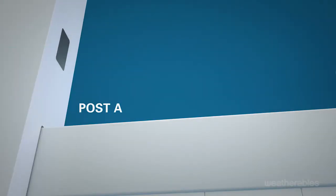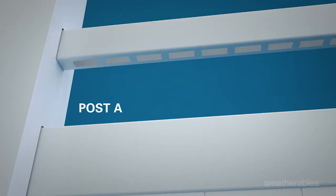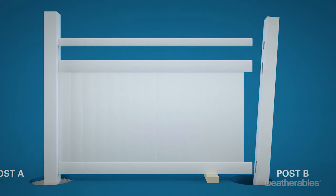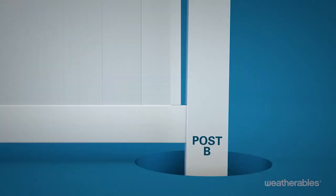Then, slide the top rail into post A, making sure that the larger routed holes face the ground. Next, slide the bottom rail, followed by the mid and top rails, into post B.